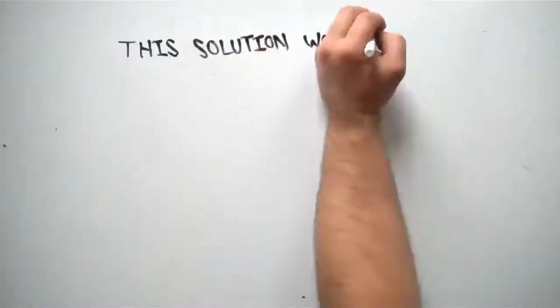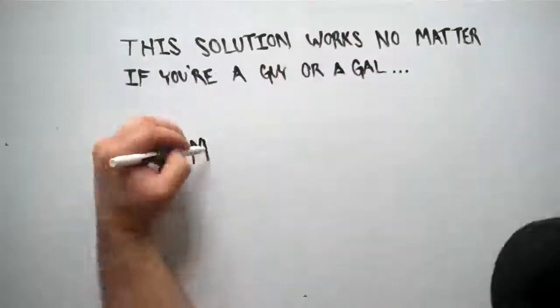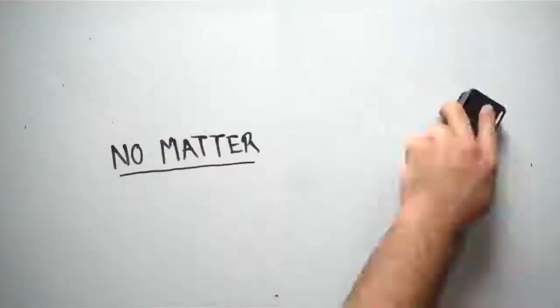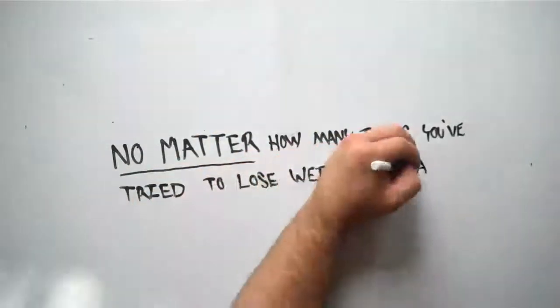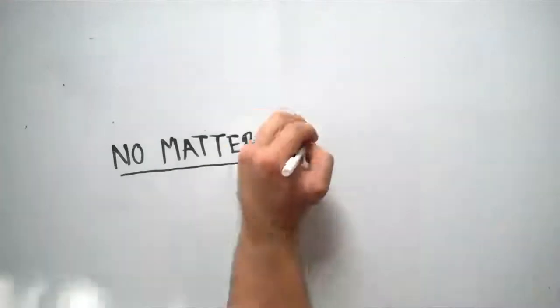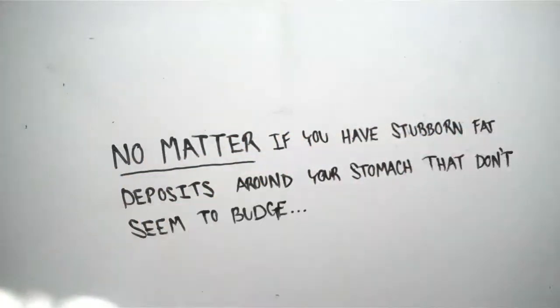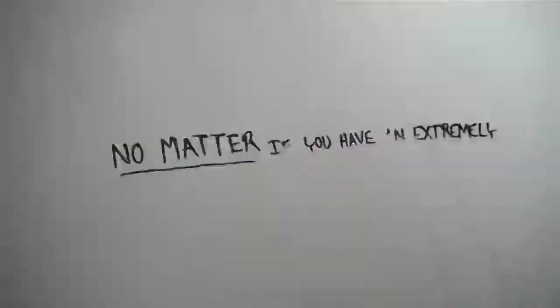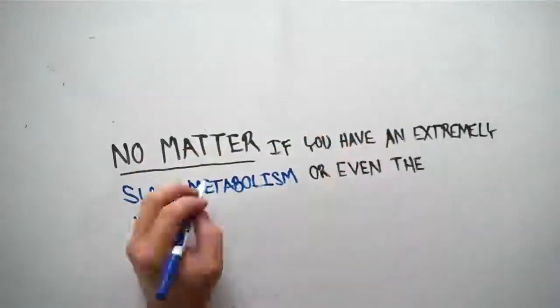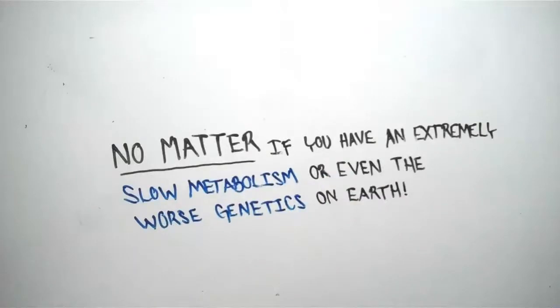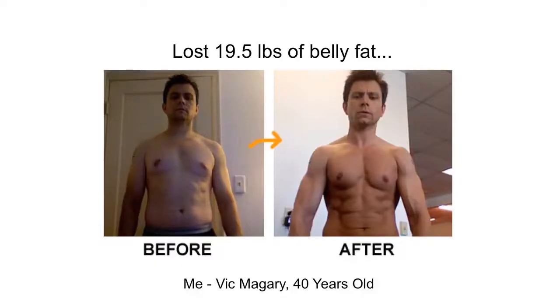And this solution works no matter if you're a guy or a gal, no matter what age you are, no matter how many times you've tried to lose weight and failed before, no matter if you have stubborn fat deposits around your stomach that don't seem to budge, and no matter if you have an extremely slow metabolism or even the worst genetics on Earth. In just a little bit, I'm going to show you how I lost 19.5 pounds of belly fat and how I'm now in the best shape of my life at the age of 40.